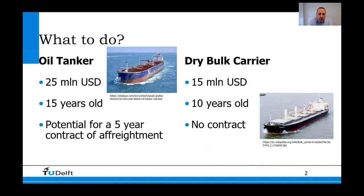Let's assume you have an oil tanker which is worth 25 million, 15 years old, and you have a potential for a five-year contract of affreightment. On the other hand, you have a dry bulk carrier worth 15 million, 10 years old, but it doesn't have a contract yet. Which of these two ships would you invest in? Which one has the better perspectives? This is what we're going to answer in this presentation.